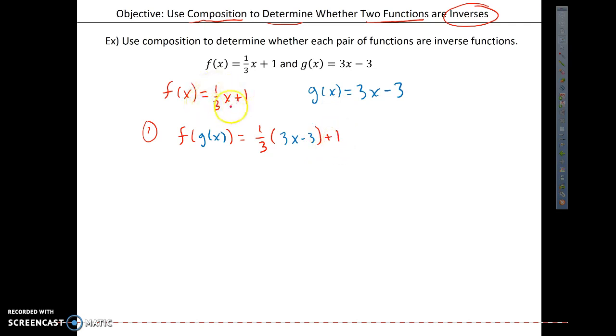Make sure that you complete your f of x function here, that you don't just stop here at g of x. That's a common mistake. So now I'm going to go ahead and distribute one third times 3x is just x. One third times negative 3 is a negative 1. And then I have a plus 1 on the end. So x minus 1 plus 1, well that is just x.